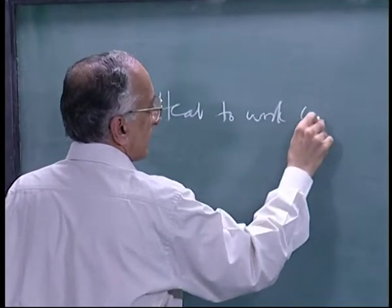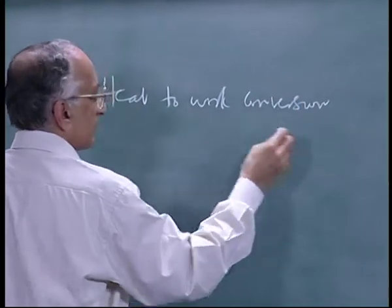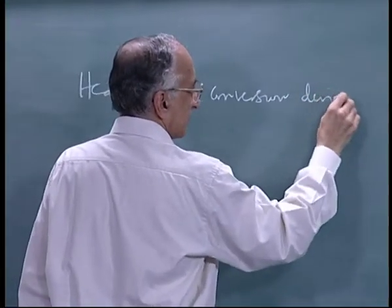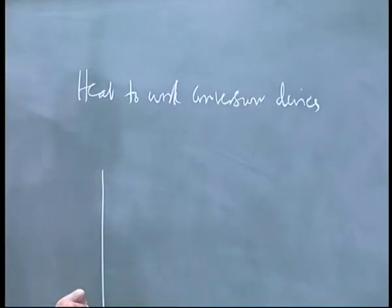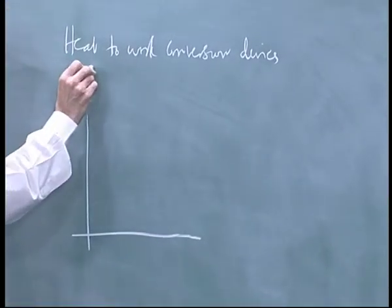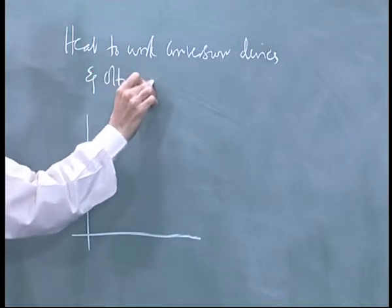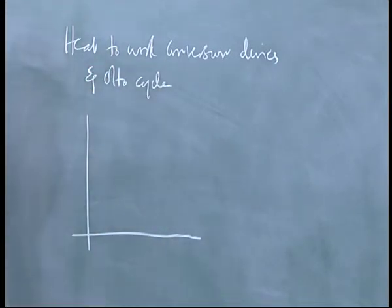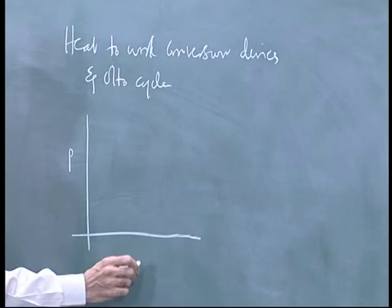Work conversion devices — take any one example: the Otto cycle, also called the auto cycle. This is the cycle on which your gasoline car still operates. So I have a P versus V diagram.